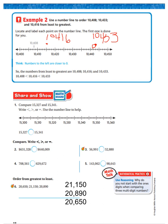So, numbers to the left are closer to zero. It says think. The numbers to the left are closer to zero. So the numbers from least to greatest are 10,408, 10,416, and 10,433. So we can read this as 10,408 is less than 10,416. 10,416 is less than 10,433.